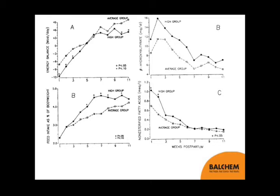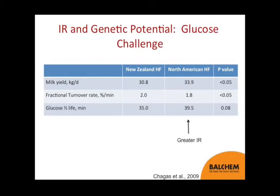Whether differences between these genetic strains were due to insulin resistance, I don't know. But John Roche's group in New Zealand developed two strains — both Holstein-Friesian, one from New Zealand ancestry and one from North American ancestry — with about a three kilogram difference in milk yield favoring the North American line. He did a glucose challenge at five weeks after calving and found the fractional turnover rate of glucose was slower — a greater half-life — in the genetically superior line, suggesting greater insulin resistance in higher-producing cows.